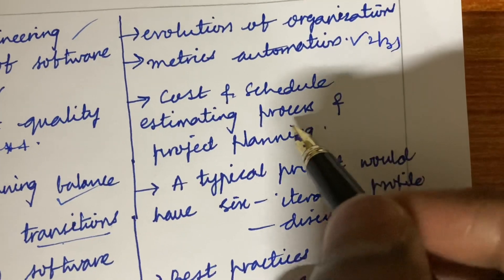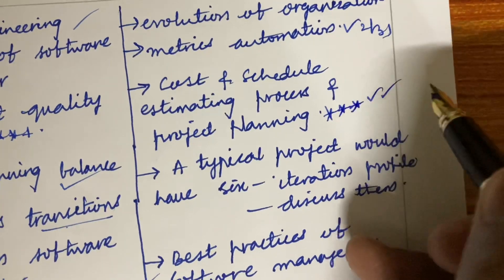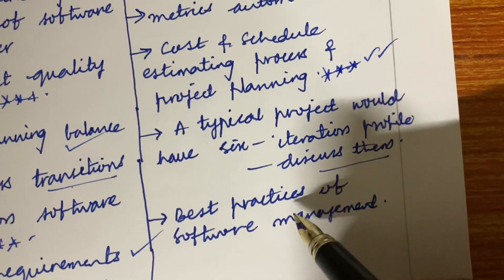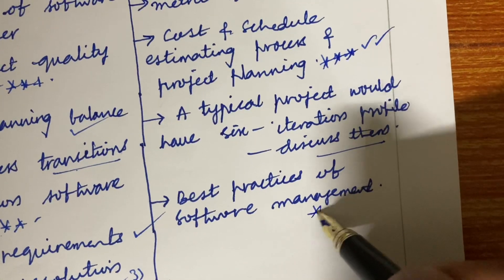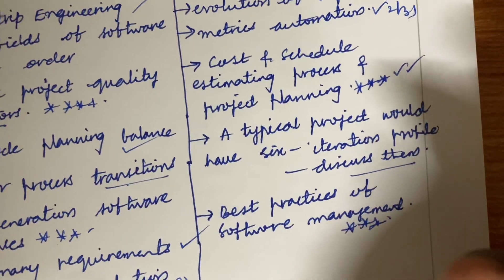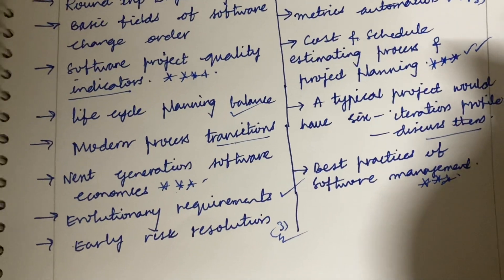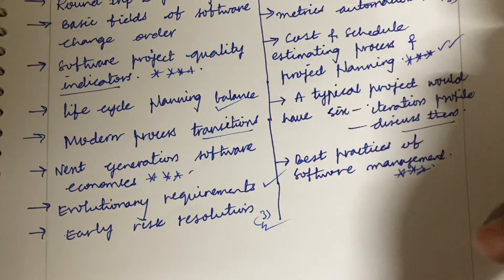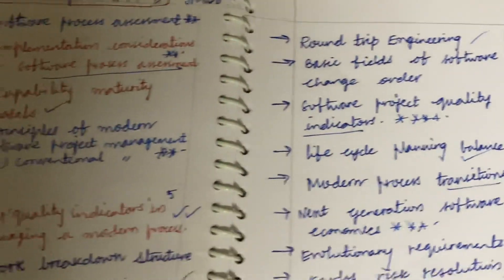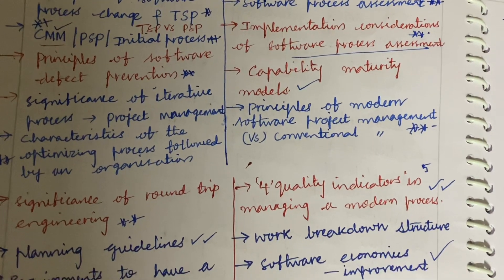Cost and schedule estimation process and project planning is repeatedly highlighted as important. A typical project would have six iteration profiles — discuss them. The best practices of software management is also said to be one of the last questions in the question paper. I have taken all the units together and highlighted the key questions — please do work out the highlighted ones. Remember, this course is all about theory, so write in point-wise bullet points. Hope you are liking my videos; please subscribe to my channel and like and comment if you are looking for any other course.